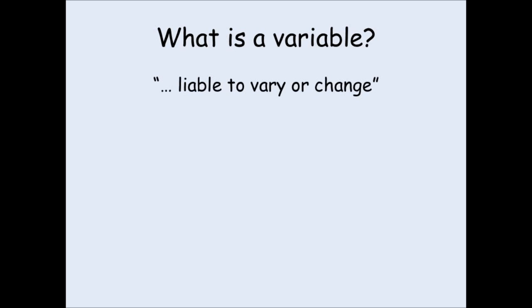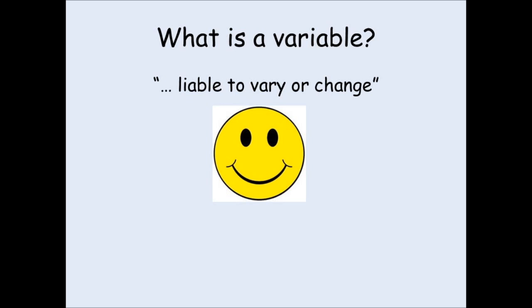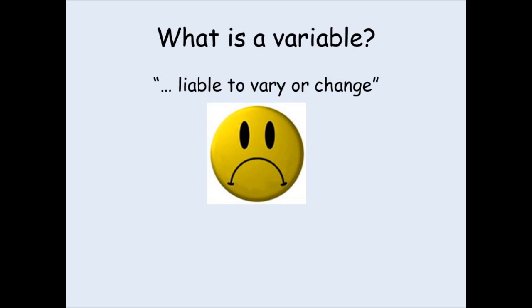So what actually is a variable? A dictionary defines being variable as something that is liable to vary or change. An example would be my mood. When you hand in your homework on time, I'm very happy. When you haven't done it, I get very cross, and a little bit sad. My mood, therefore, is variable.